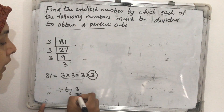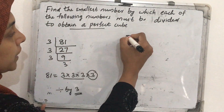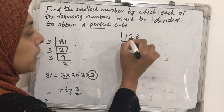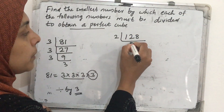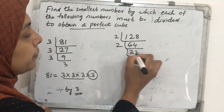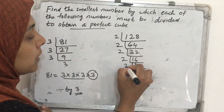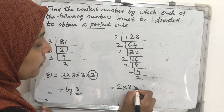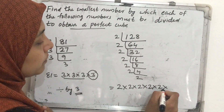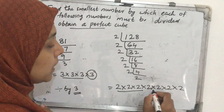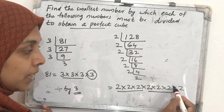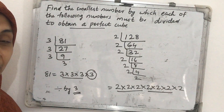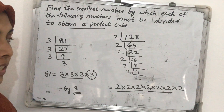Another example: 128. We want to divide 128 by which number to get a perfect cube. We find its prime factorization: 128 = 2 × 64 = 2 × 2 × 32... and so on. We get 2 appearing 7 times. Taking triplets: one triplet of 2 and another triplet of 2 — that's six 2s. One 2 is remaining outside the triplets. So we should divide 128 by 2 to get a perfect cube.